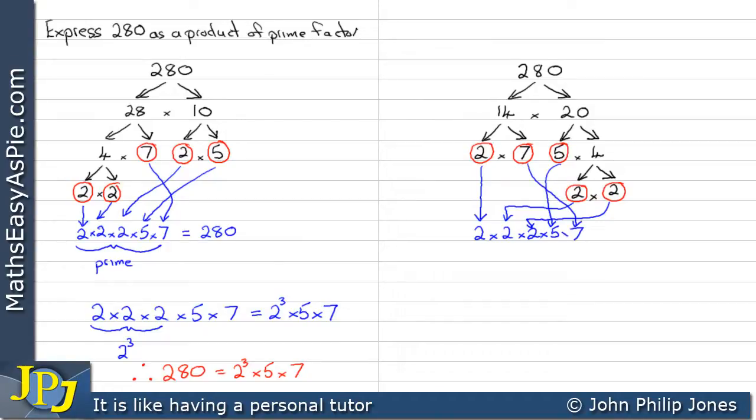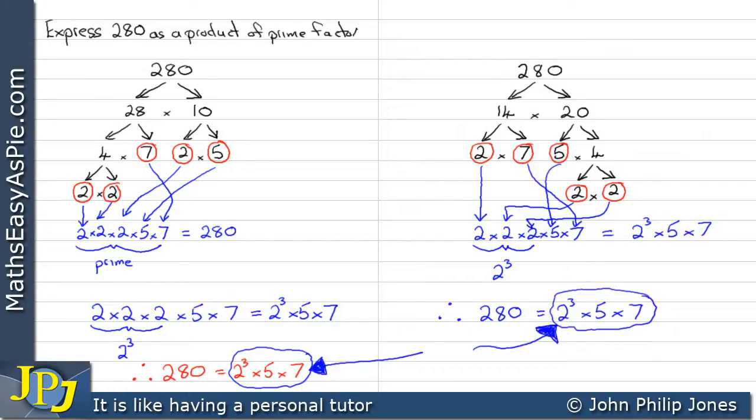And you can see we're multiplying them all together. Of course, these three 2s here can be written down as 2 to the 3. So I can rewrite this as 2 to the 3 times 5 times 7. Therefore, 280 can be written as its prime factors as follows: 2 to the 3 times 5 times 7. Now, it should be obvious, and you should note, that they are the same. So doing it different ways gives the same result, as you can see here.